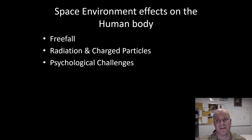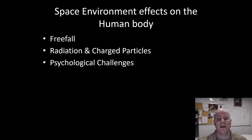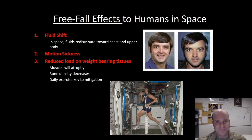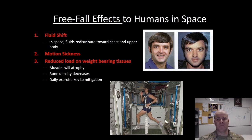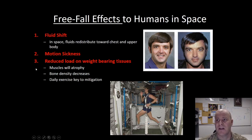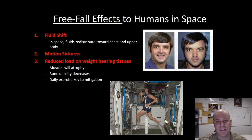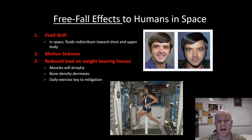The space environment also has effects on the human body. We'll discuss freefall effects, radiation and charged particle effects, and psychological challenges. For freefall, one effect is fluid shift — in space, your fluids redistribute primarily towards your chest and upper body, causing noticeable changes in appearance as seen in pre-flight versus in-flight astronaut photos. You can also experience motion sickness. Third, there is reduced load on weight-bearing tissues: muscles may atrophy and bone density decreases. Astronauts mitigate this by exercising daily and frequently.